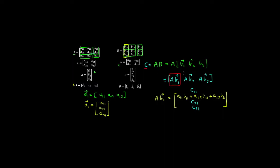Similarly, multiplying matrix A by column vector B2 gives us the elements of the resulting matrix in the second column. So we can think of these as: C column 1, C column 2, and C column 3.